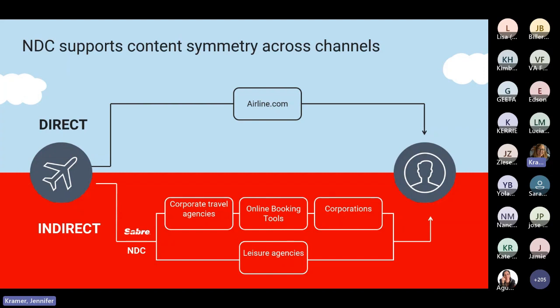For corporations, NDC creates opportunity to negotiate new types of content options that better align with travel program needs and objectives. For example, if you have employees frequently traveling between specific origin and destination, negotiating inclusions such as lounge access or priority boarding helps drive compliance and attachment rates. As travel options are tuned more finely to the company's specific needs, there should be enhanced compliance with corporate travel policies, and greater potential to help with balancing corporate travel budgets.